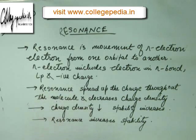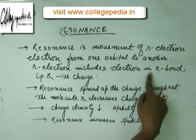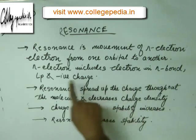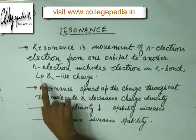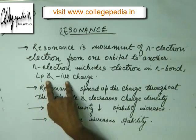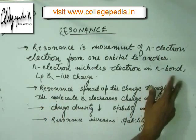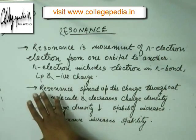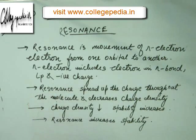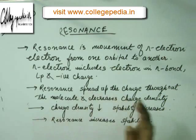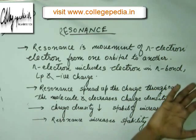The electrons which participate in resonance are called pi electrons. We have seen the resonance of pi bonds; we haven't seen those of lone pairs and negative charges yet — that will be seen in due course. But electrons in pi bonds, lone pairs, and negative charges are all pi electrons, and the movement of pi electrons from one orbital to another is called resonance.